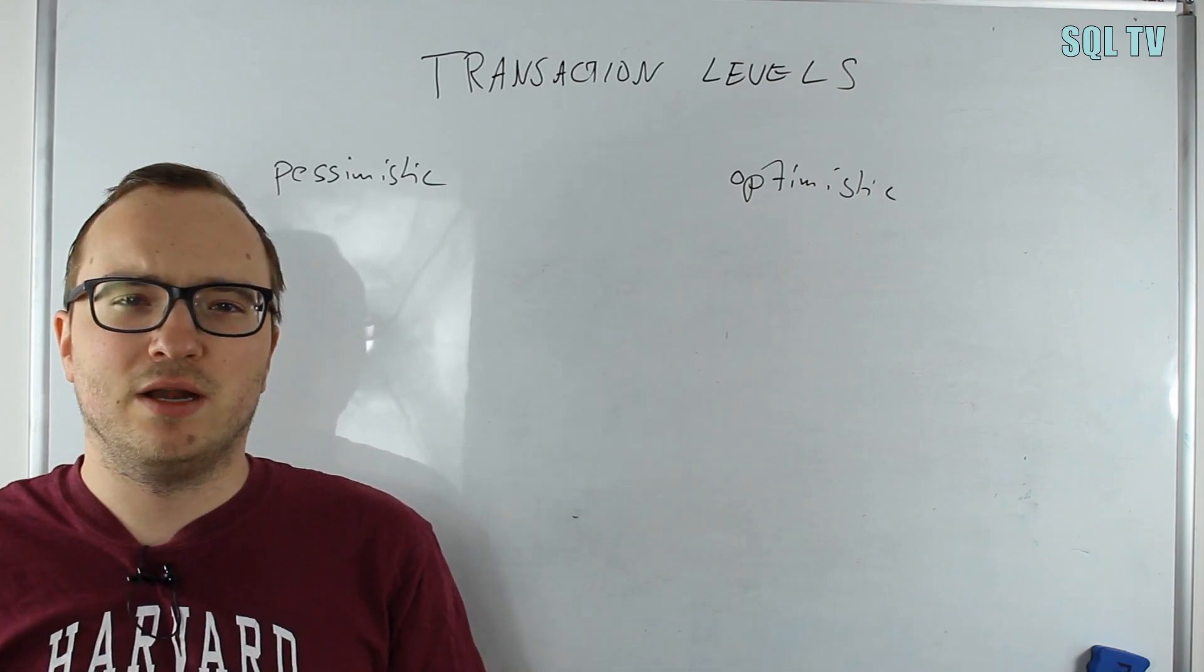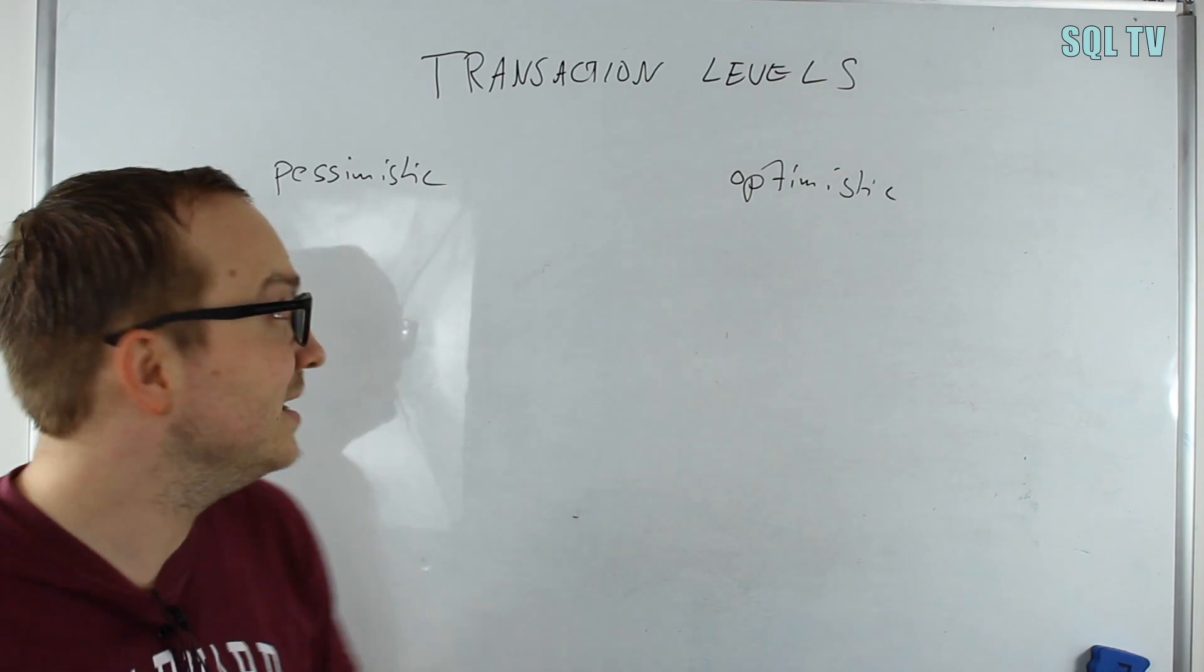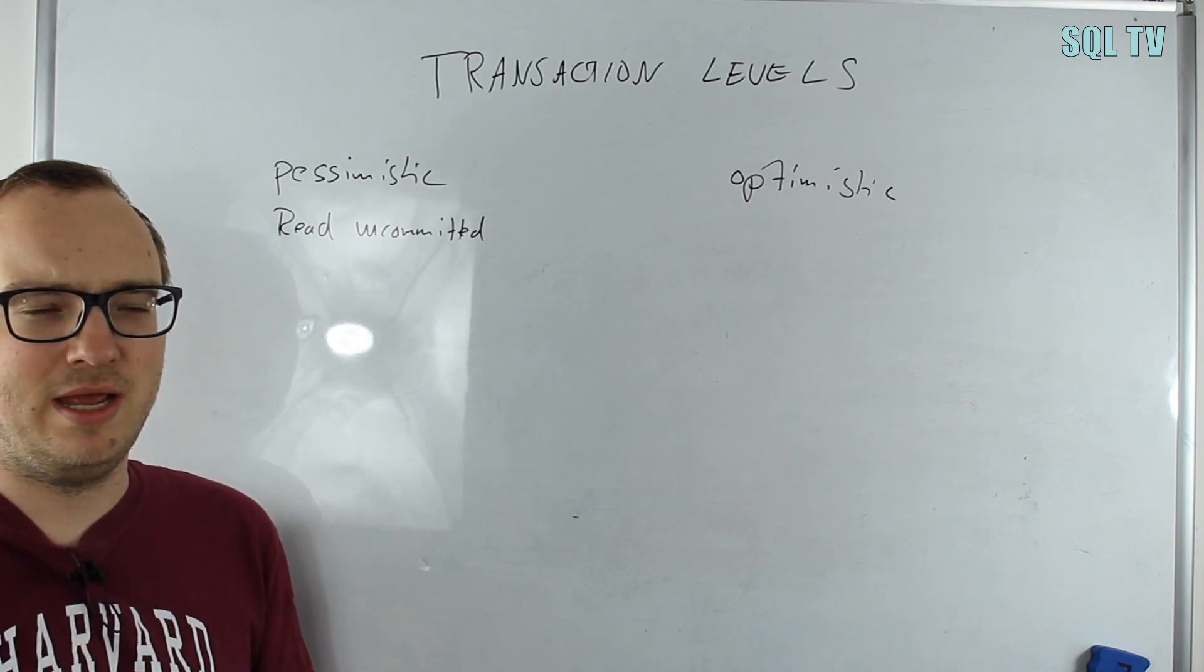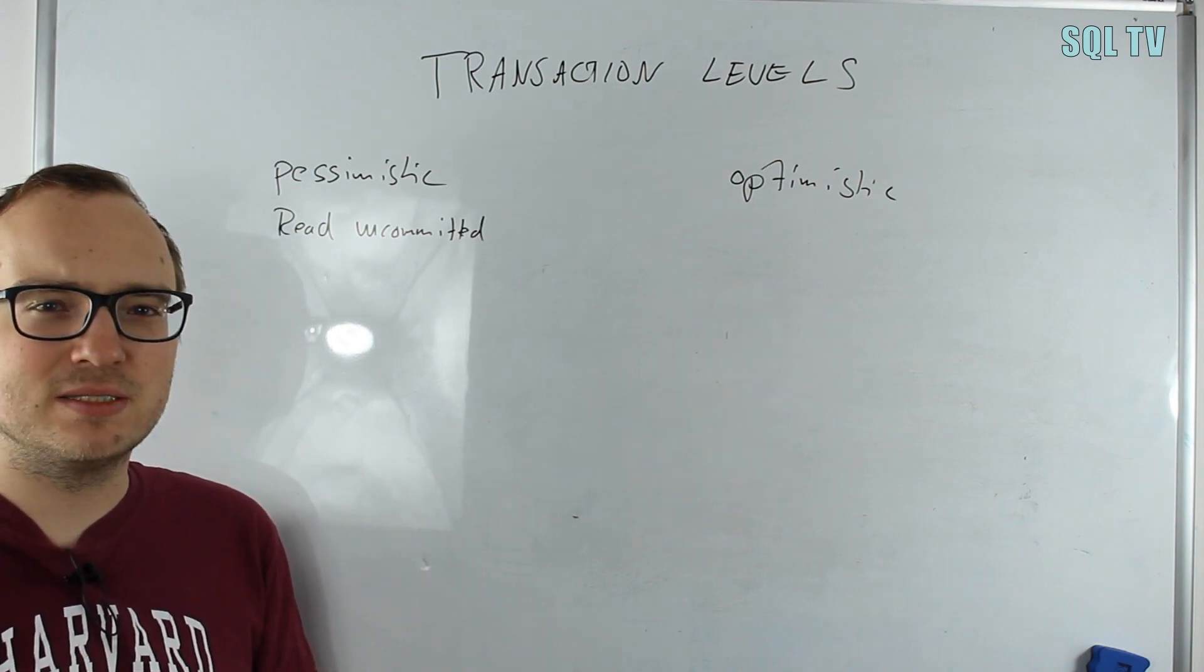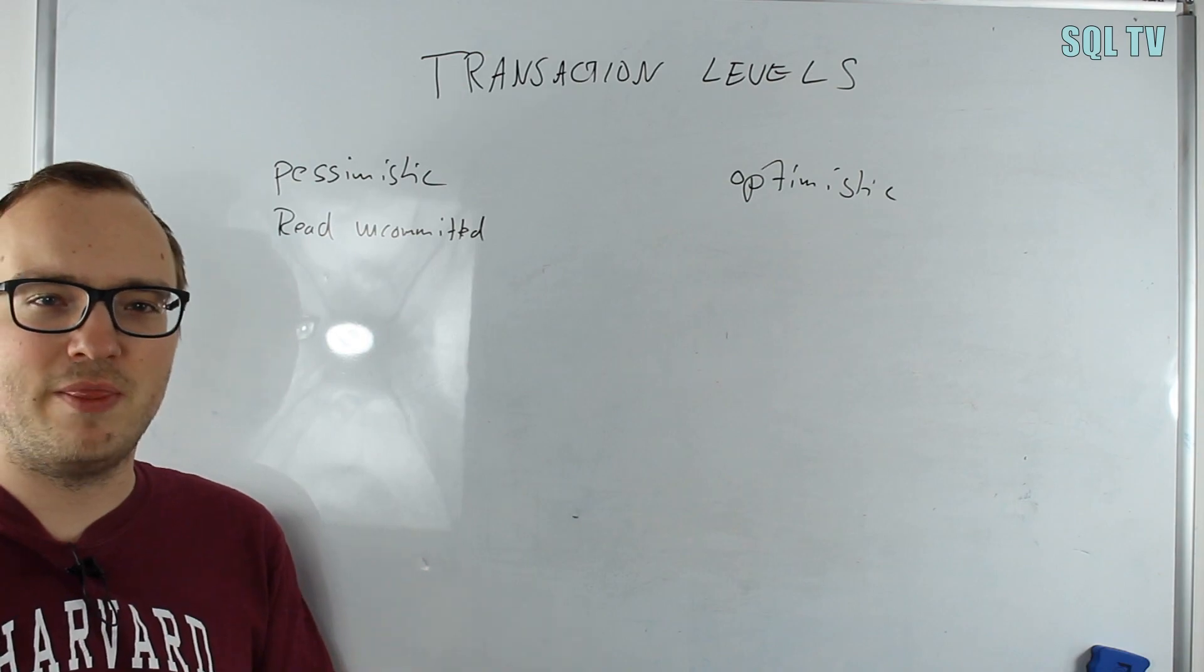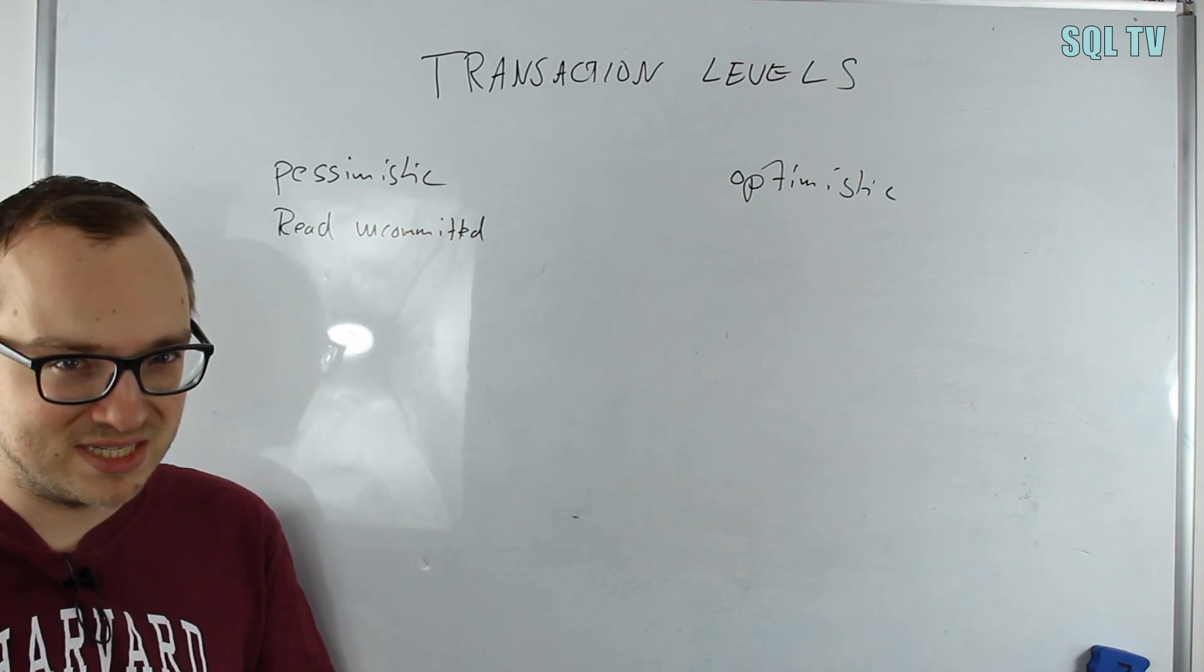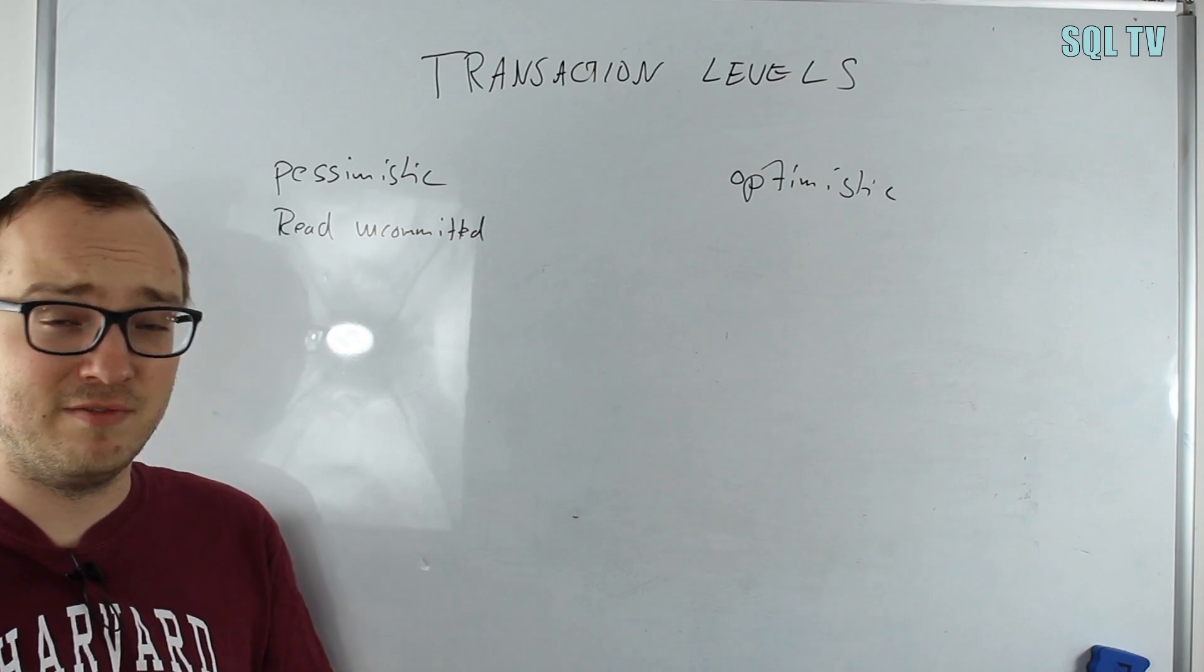Let's start with read uncommitted, the one that has the least restrictions. It's a pessimistic type. In read uncommitted, you basically allow every phenomena. We don't have any locks, so readers can't block writers, writers can't block readers. The big pro is you don't have locks and therefore no blocks at all. You give up consistency for speed, but that's the bad thing—you give up consistency, and depending on your application, it might not be best to give up consistency in a database.